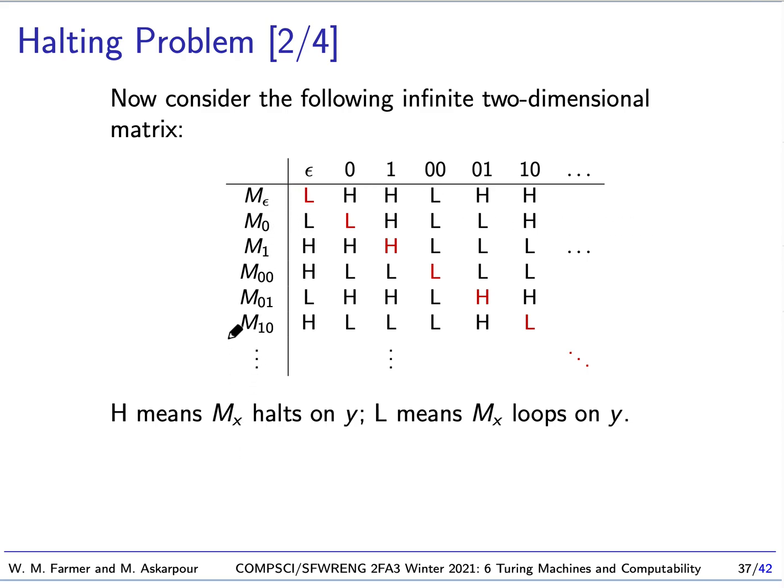So now let's consider the following infinite two-dimensional matrix. Over here, we have all possible Turing machines. And these Turing machines are given by, are identified by strings of zeros and ones. Some of these are the trivial Turing machine that just immediately halts. Other ones are Turing machines that do something useful. And these are the possible inputs to the Turing machine. So these are, remember we're focusing on Turing machines that take inputs which are strings of zeros. So these are the possible inputs. And then H here means it halts.